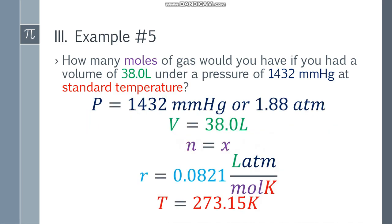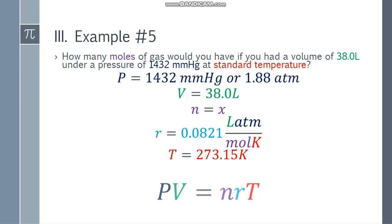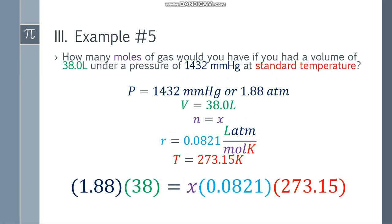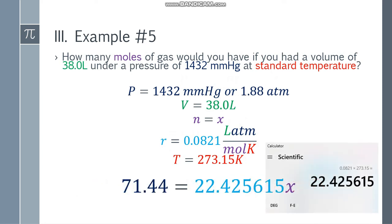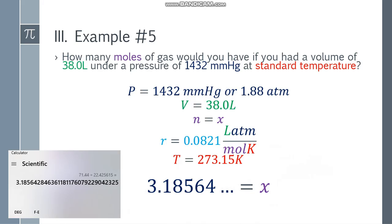Going back. Okay na tayo. ATM, liters, Kelvin. Lagay mo na yung formula. PV is equal to nRT. We have 1.88 here times 38 is equal to x times 0.0821 multiplied to 273.15. That will be 71.44 is equal to 22.425615x. Divide both sides by 22.425615. And the answer will be 3.18564 and so on.